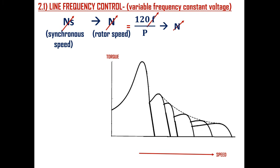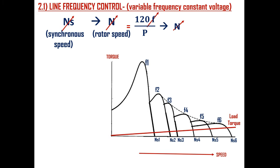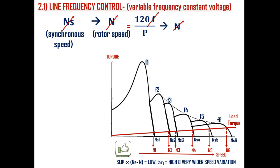As you can see in the torque-speed characteristics, if frequency increases from F1 to F6 then synchronous speed also increases from Ns1 to Ns6. For the load torque shown here, the rotor speed N also increases from N1 to N6. A very important advantage of line frequency control is low slip operation, by which we can get high efficiency in the motor.